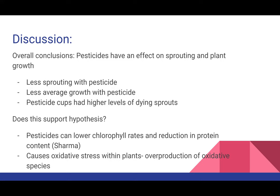These conclusions support my hypothesis. My hypothesis was based on the fact that pesticides have a lot of chemicals, and I thought this could impact seeds and growth rates. Looking at scientific journals, we found that pesticides can lower chlorophyll rates and reduce protein content — I was specifically looking at a study done on cabbage plants. This trend was probably also true of my results with the watercress seeds. Pesticides also cause oxidative stress within plants, which is basically an overproduction of oxidative species.